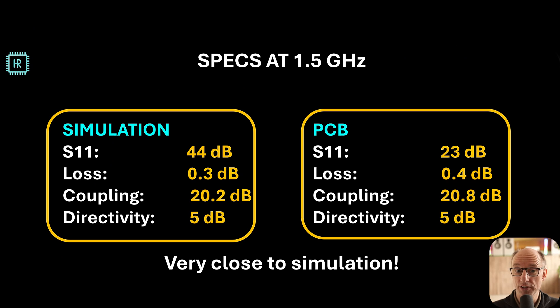So let's see what we got in the end. The simulation shows a matching of 44 decibels and in practice we have 23. 23 dB is great. The loss on simulation is 0.3 dB and in reality it's 0.4 dB. The coupling is 20.2 and in reality 20.8. That's very close. And the directivity is exactly the same in the simulation as in the real PCB. So this is a great result for using very cheap board material. And this shows you can very easily make one of these yourself at home.